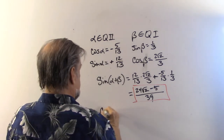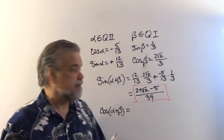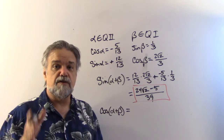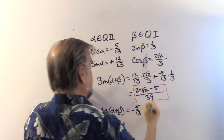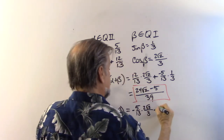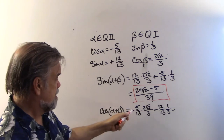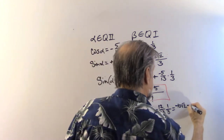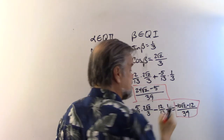Now let's do the cosine. Cosine of alpha plus beta equals cosine α · cosine β minus sine α · sine β — remember, the signs change for cosine. Cosine α is −5/13, cosine β is 2√2/3, minus sine α (12/13) times sine β (1/3). That gives us negative 10√2 over 39 minus 12 over 39, which is my answer for cosine of alpha plus beta.